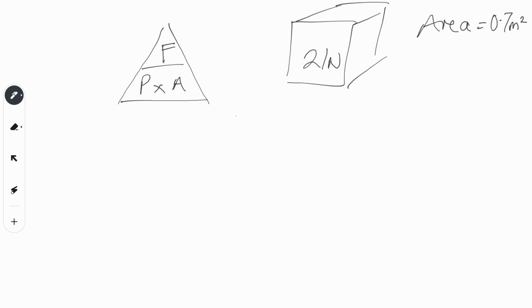So we know we want to calculate the pressure because we've got the force here and the area here. So we're going to do the pressure equals the force divided by the area, remembering that this means divide. So the pressure is equal to 21 newtons divided by 0.7 meters squared.